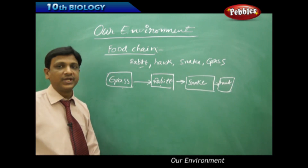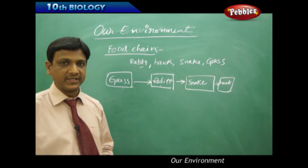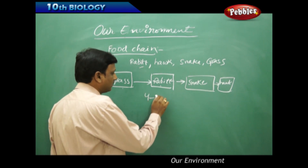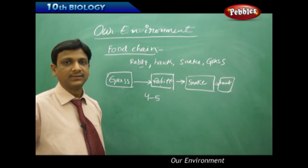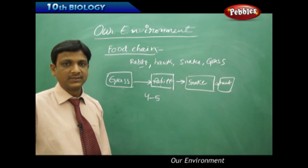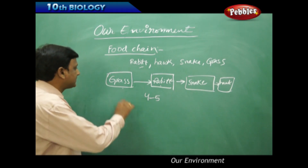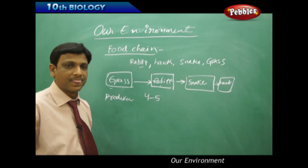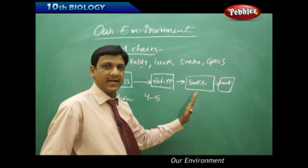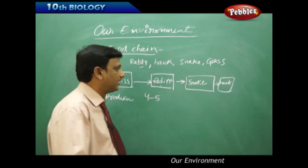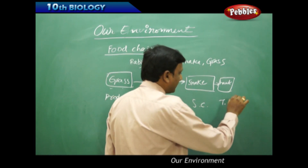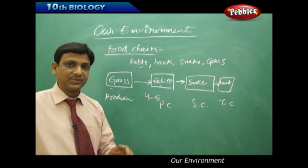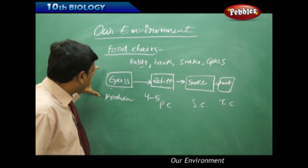Now let us identify some important points from this food chain example. If you observe food chains in your surroundings, you will find most of them are short, merely having four to five organisms involved. Also, food chains begin with the producer and proceed to the consumers. In the consumers there is a grading or classification: primary consumer, secondary consumer, and tertiary consumer.